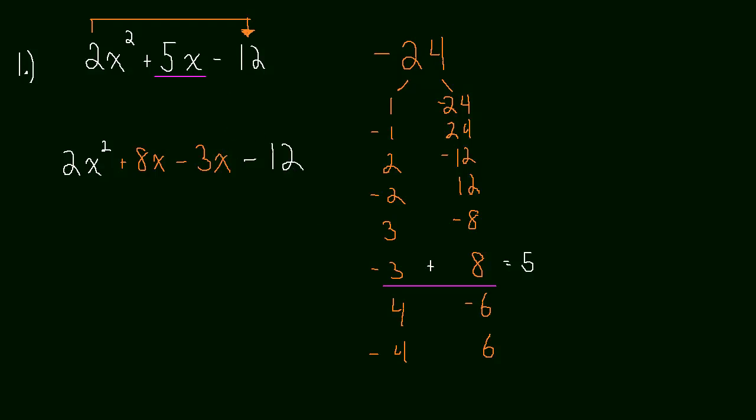And from here, what we're going to do is we're actually going to group. So we're going to say, okay, 2x squared plus 8x plus negative 3x minus 12. And now we have two different groups. And between each group, sorry, this is an 8x. Between each group, what we want to do is we want to factor out what we can.